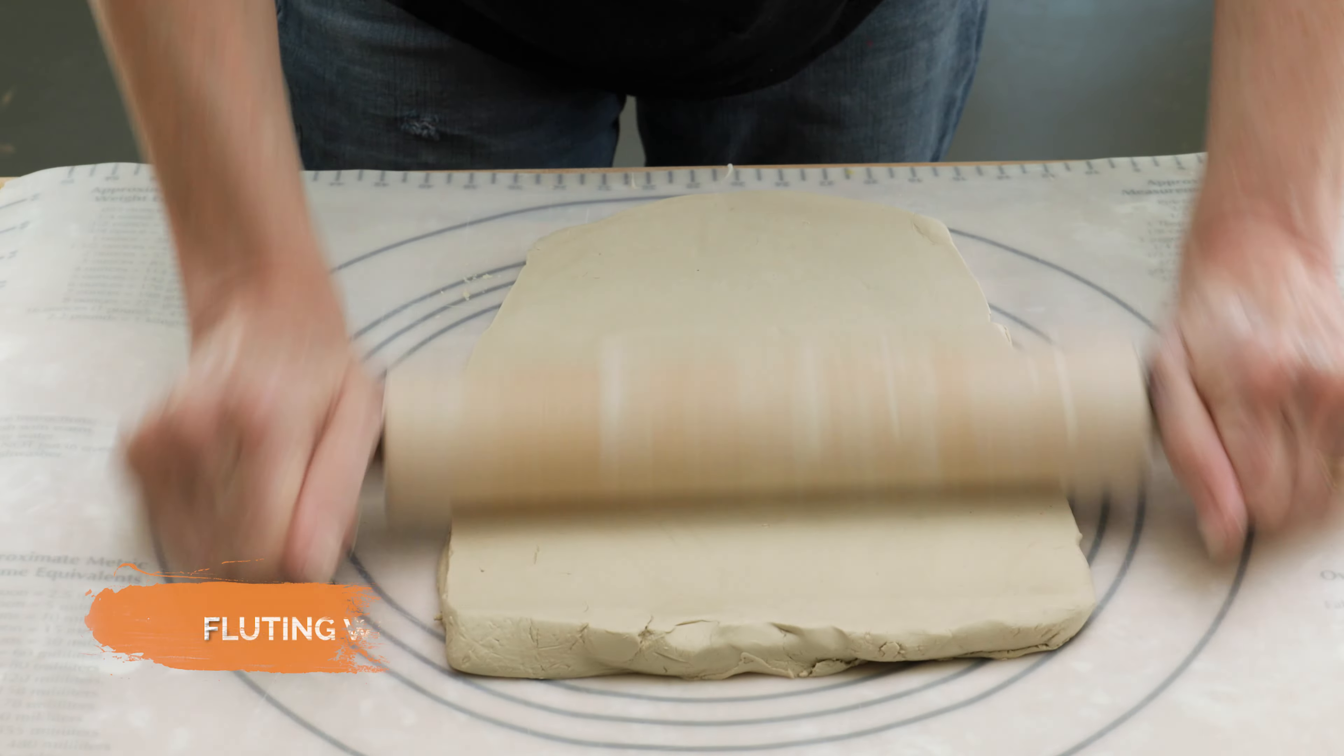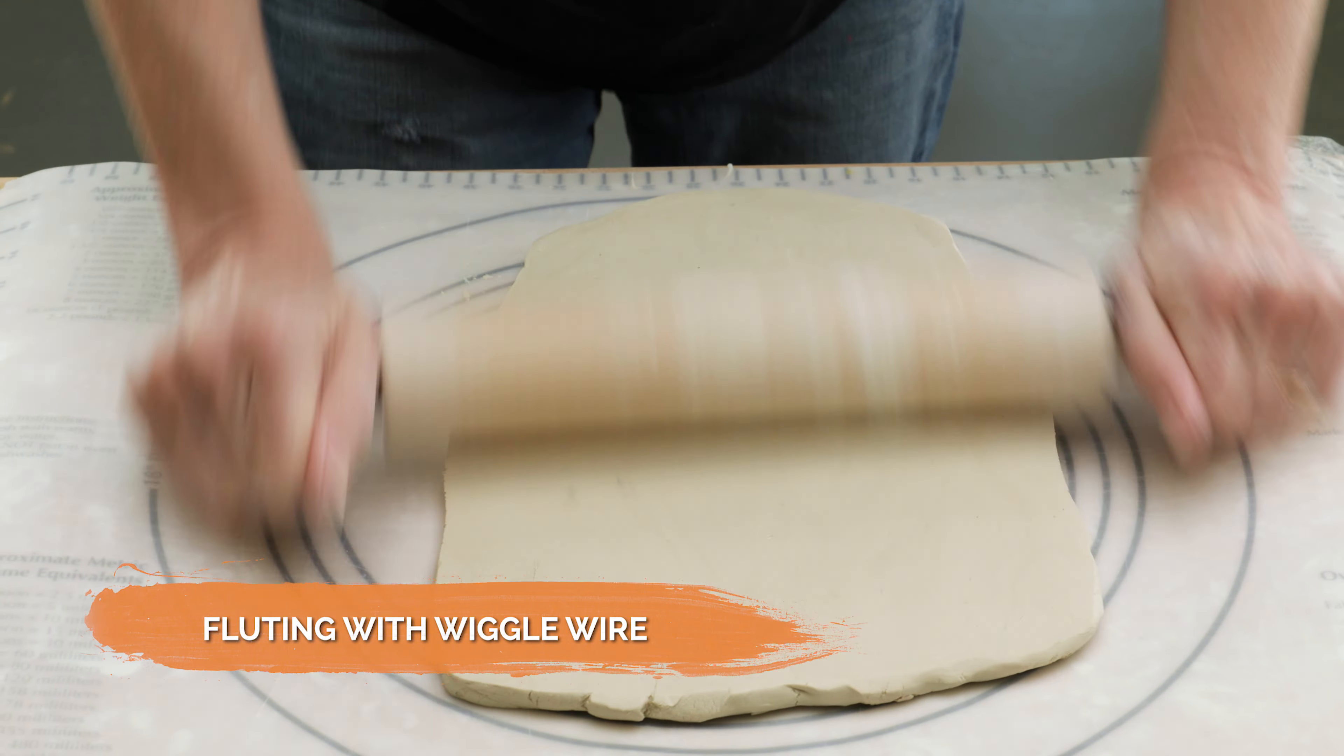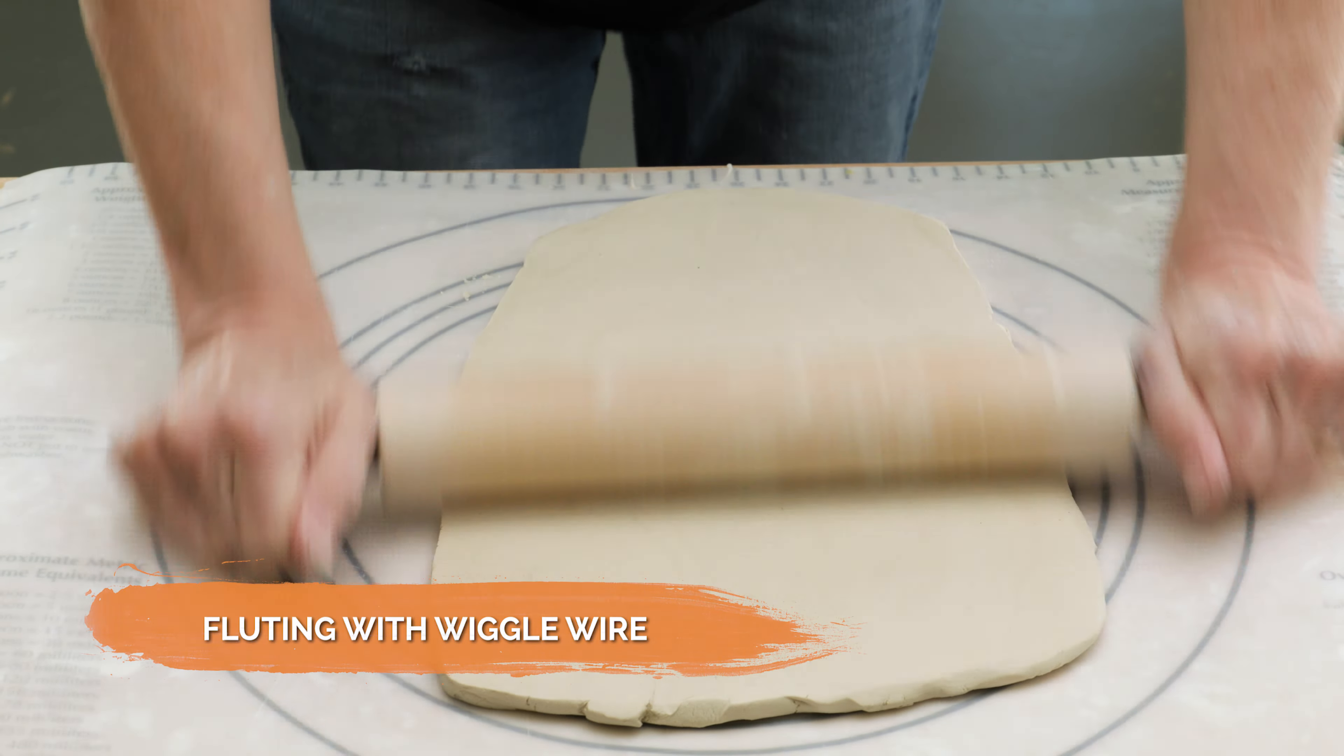Finally, I thought I'd experiment with a way to flute for all the hand builders out there. I rolled a quarter inch slab on my mat between two rulers and ribbed it smooth on both sides. I took the mat off the table, then stuck the slab to the table using a rib and a rolling pin for good measure.